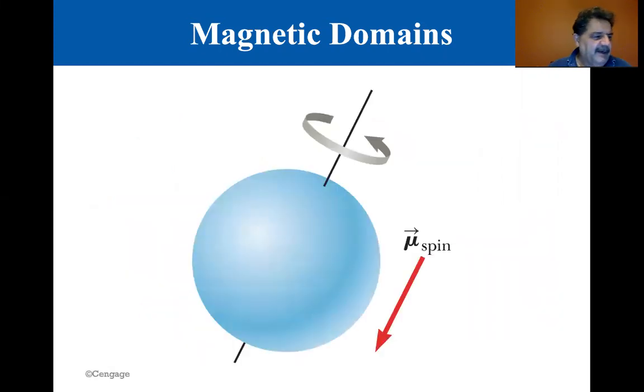There are some atoms that have what are called spin, and mu spin, the magnetic spin moment, called the electron spin.